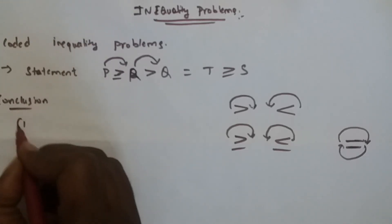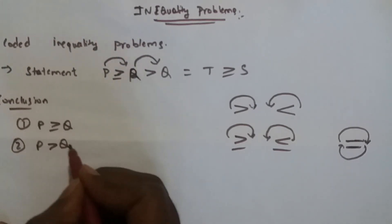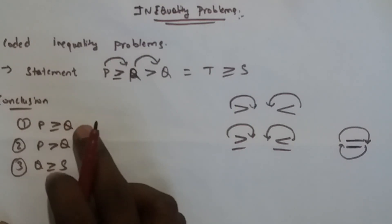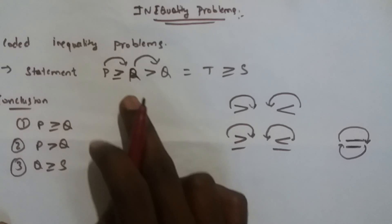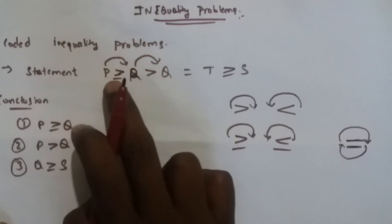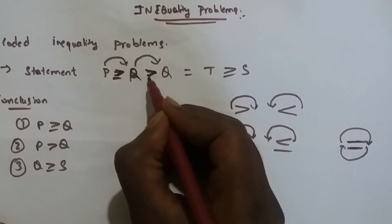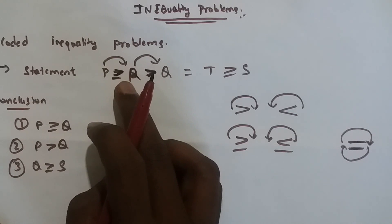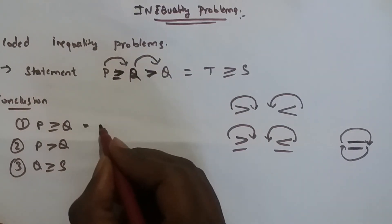Now see the conclusions. The first conclusion is p greater than or equal to q. Here, from p moving to q we have p greater than or equal to r, but the conclusion says p greater than q only — there is no equal to. That is why this statement is not valid; it is a false statement.